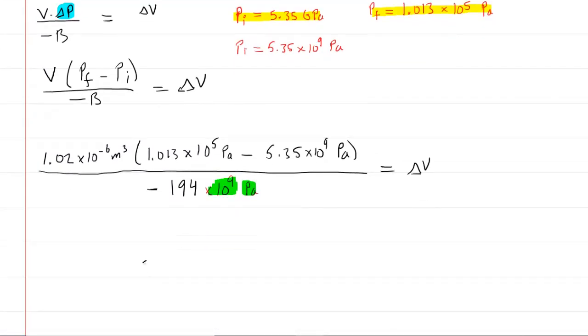It's 2.81 times 10 to the negative 8. Dimensionally, the pascals in the numerator and the pascal in the denominator will cancel. This will leave you with meters cubed. This result should make some sense because we have a positive change in volume.